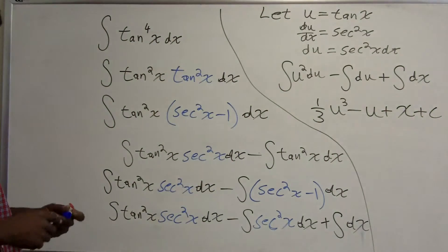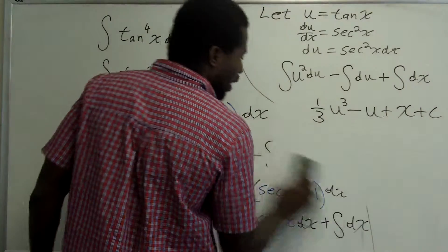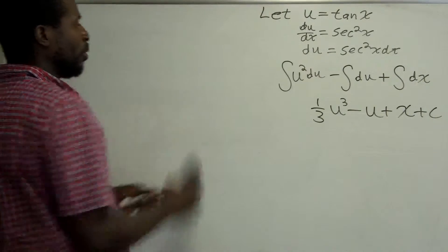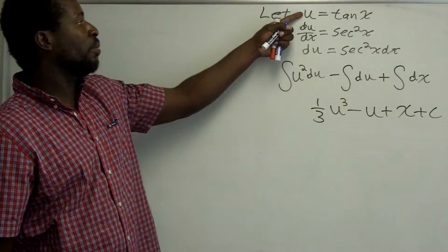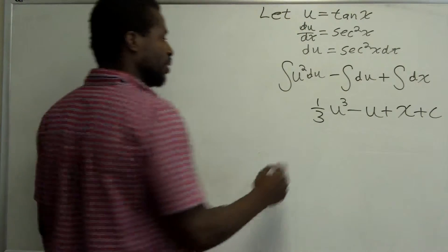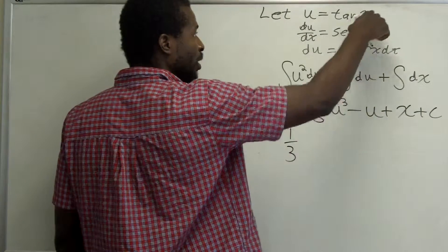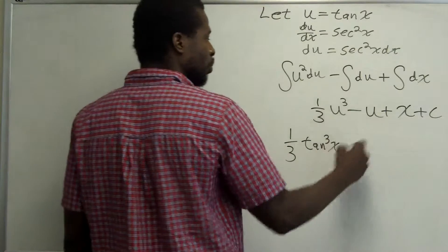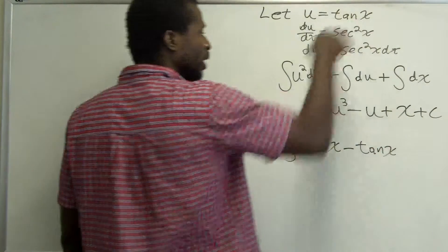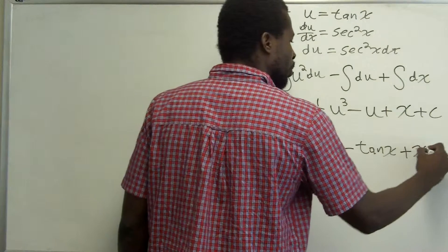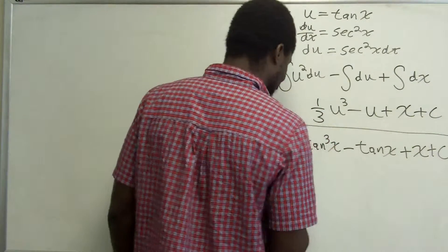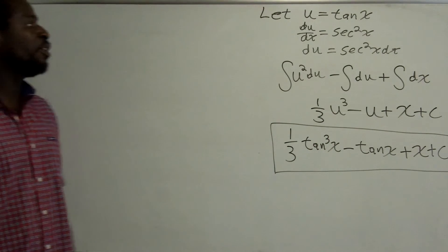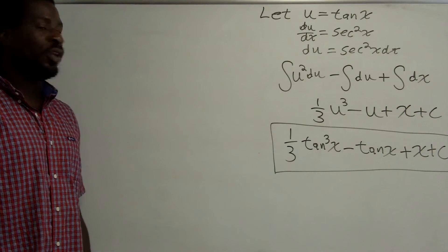Now I can do my back-substitution. The original problem didn't involve u, so I'll plug u back in as a function of x. This gives one-third tangent cubed of x, minus tangent of x, plus x plus C. And there we have the integral. That is how we integrate integrals involving even powers of tangent with no factors of secant.